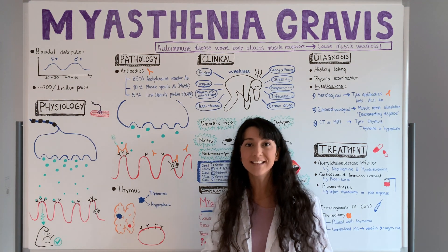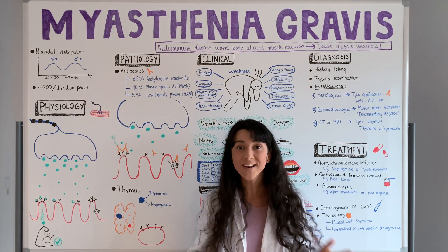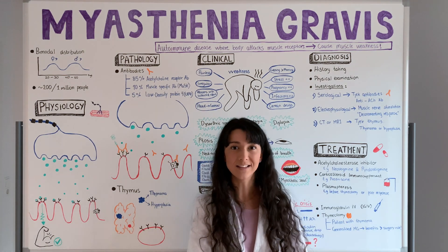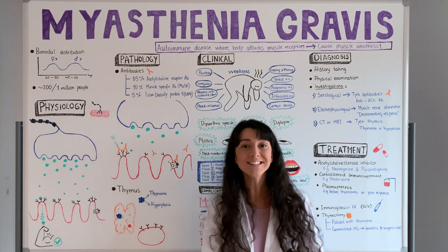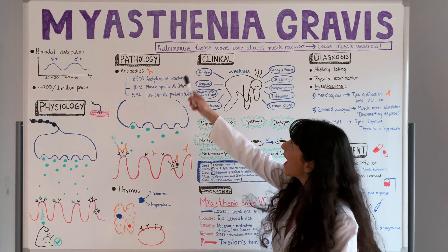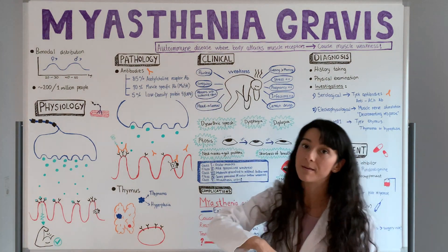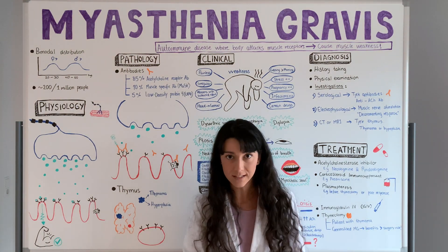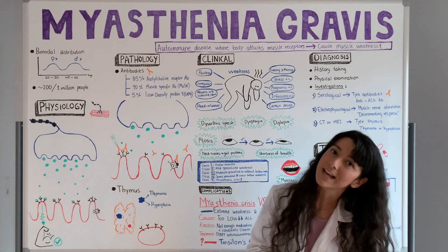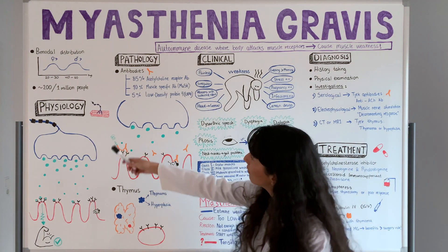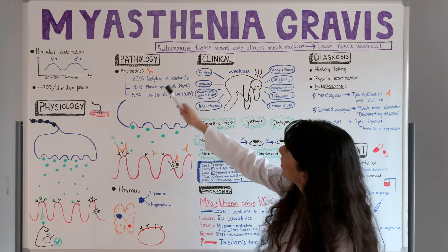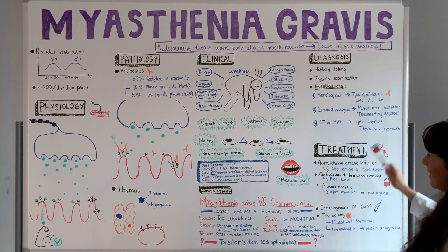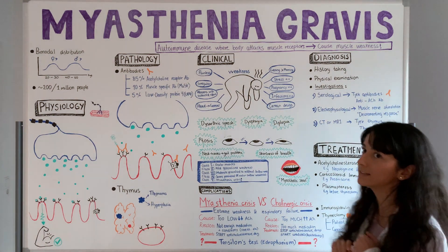Today I will talk about myasthenia gravis. In one sentence, myasthenia gravis is an autoimmune disease where the body attacks the muscle receptors, which leads to muscle weakness. In order to understand myasthenia gravis, I'll cover physiology, pathology, clinical presentation, diagnosis, and lastly, treatment of myasthenia gravis.